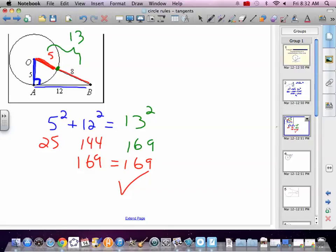So, Pythagorean theorem is working, which means it's a right triangle, which is perpendicular, which means it's tangent. All through that set.